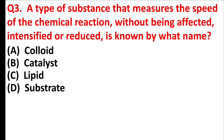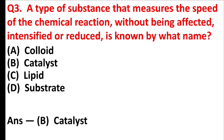A type of substance that measures the speed of a chemical reaction without being affected, intensified, or reduced — is known by what name? Answer is option B, catalyst.